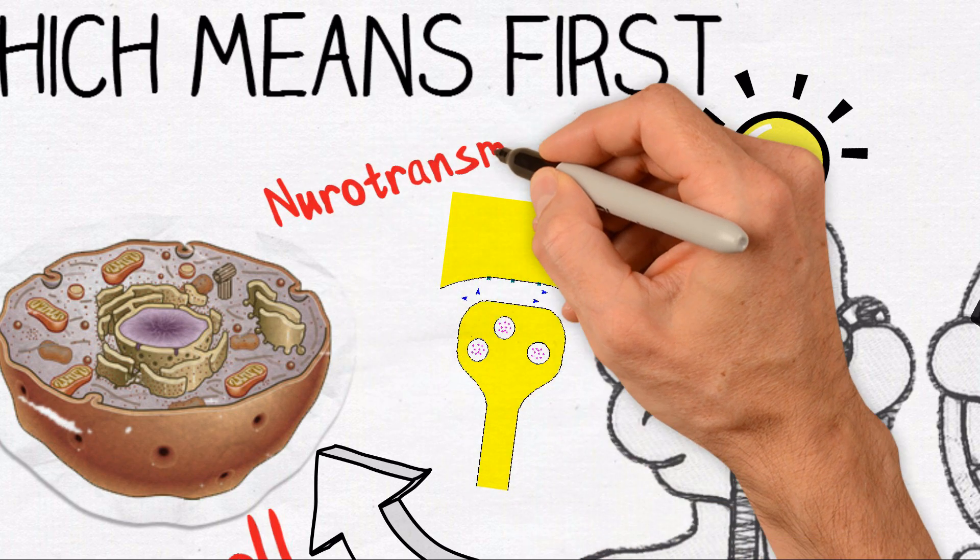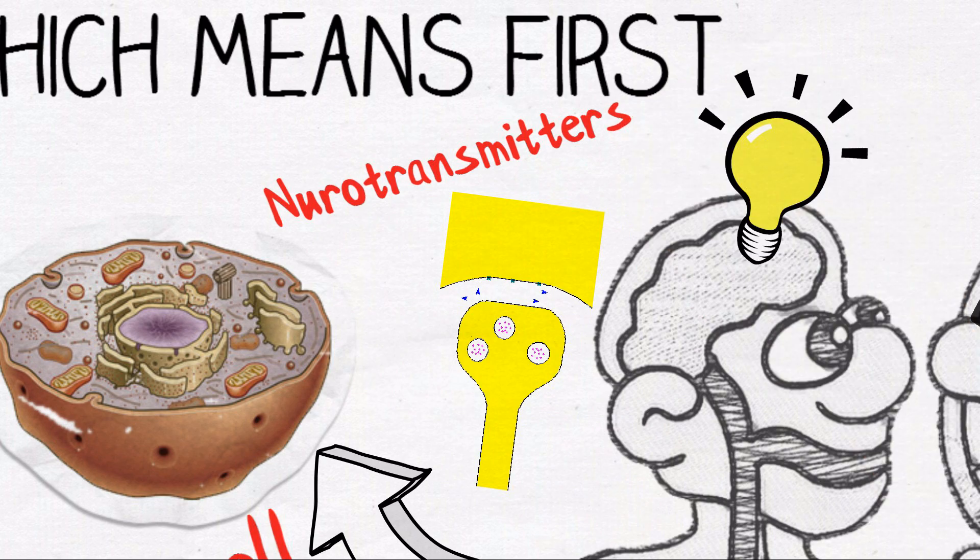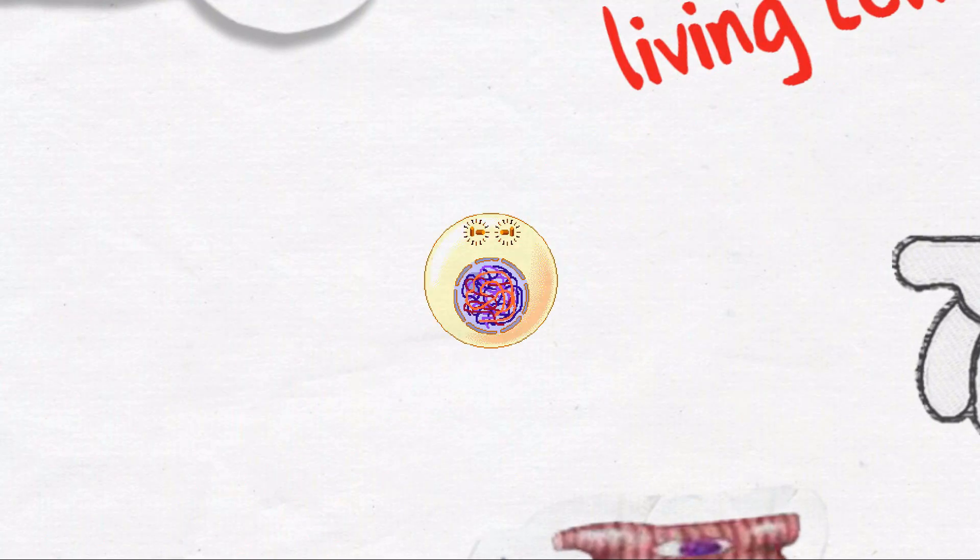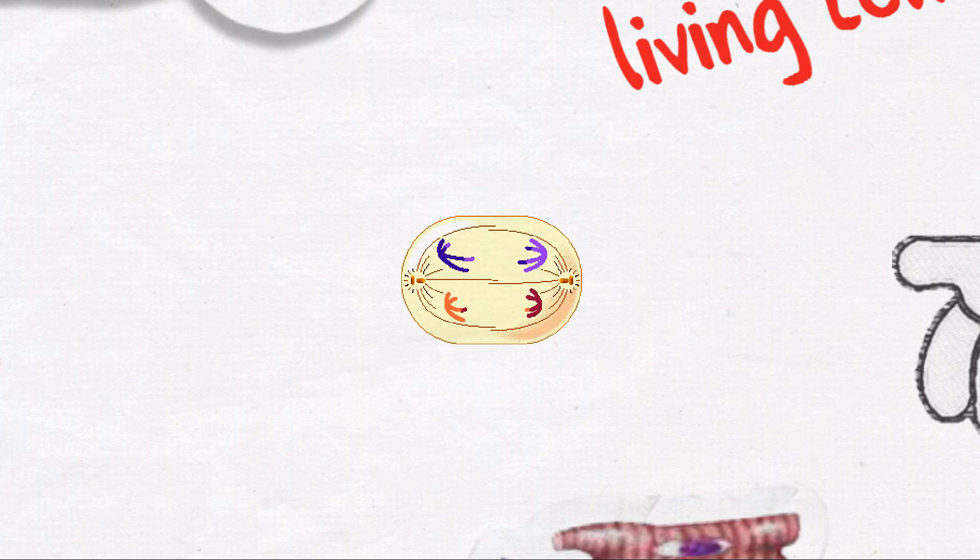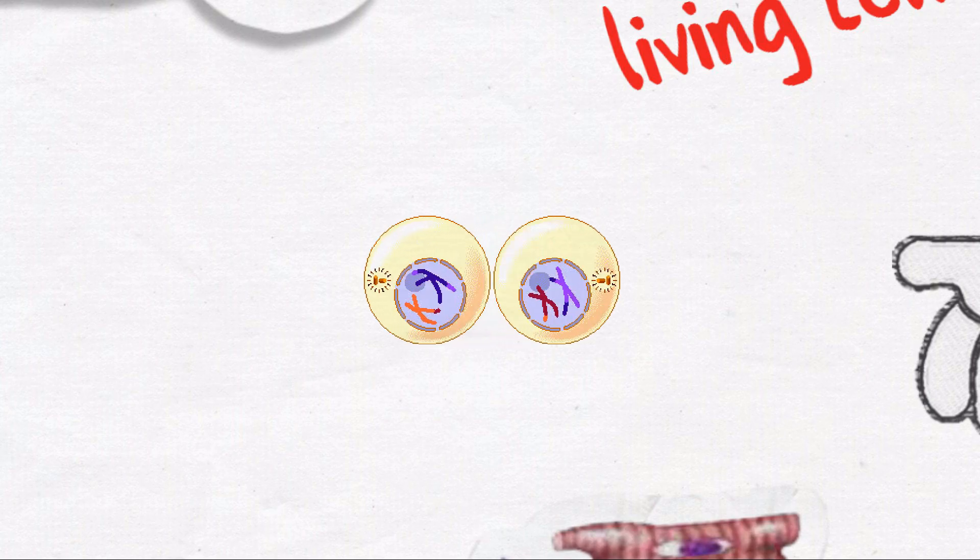Sending these messages requires chemicals called neurotransmitters. Making neurotransmitters requires, guess what, proteins. Finally, proteins play an important part in the creation of every new cell and every new individual. Your chromosomes consist of nucleoproteins, which are substances made of amino acids and nucleic acids.